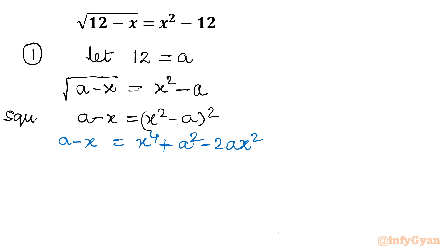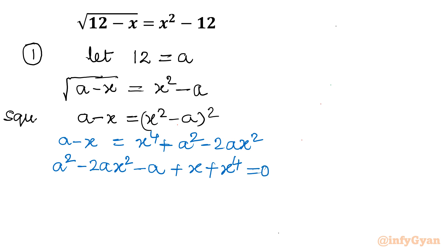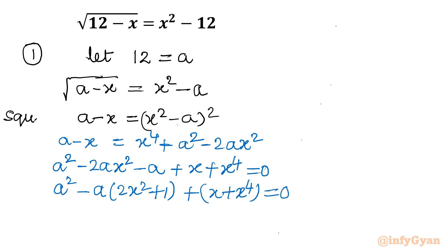Now I will target to make this equation quadratic in a, not in x. Taking all terms to one side, I write: a squared minus 2ax squared minus a plus x plus x to the power 4 equals 0. Now I will frame this as a quadratic in a. Taking minus a common, I have minus a times (2x squared plus 1), and the constant term is x plus x to the power 4. Now it is quadratic in a, so I will apply the quadratic formula.